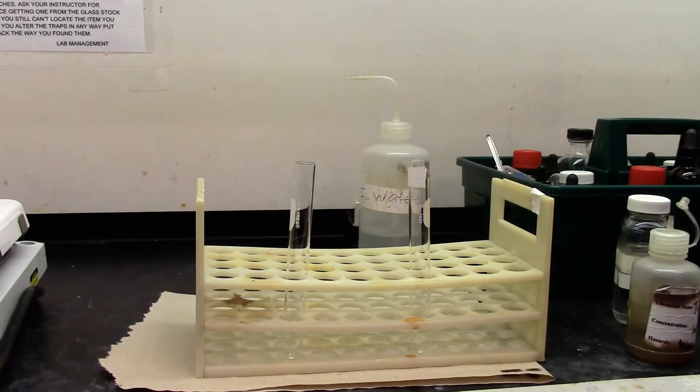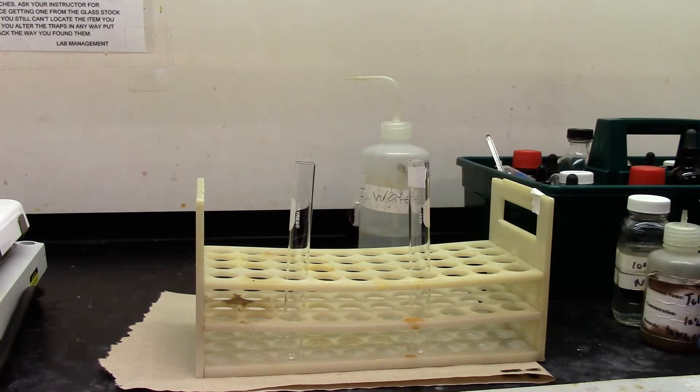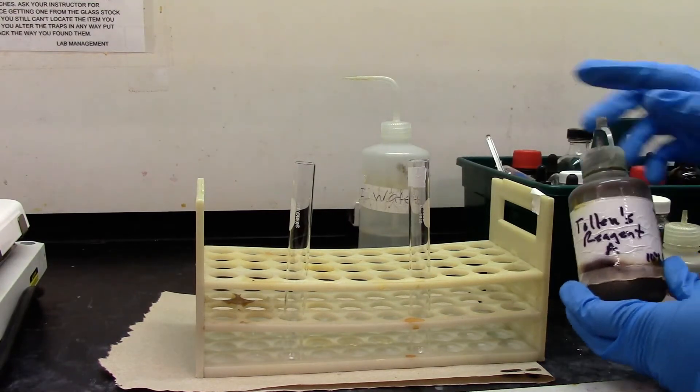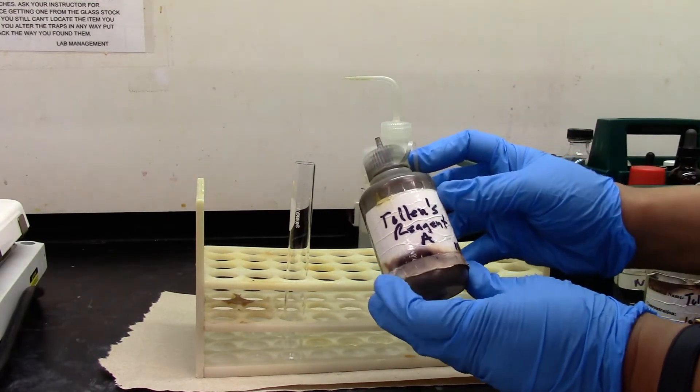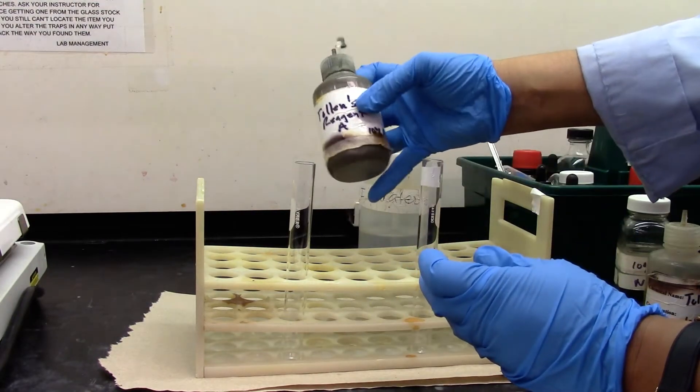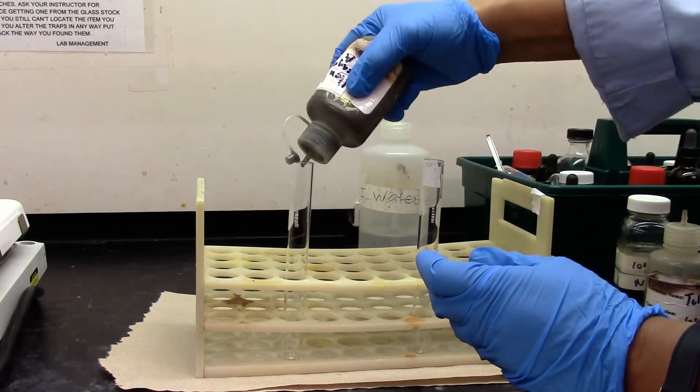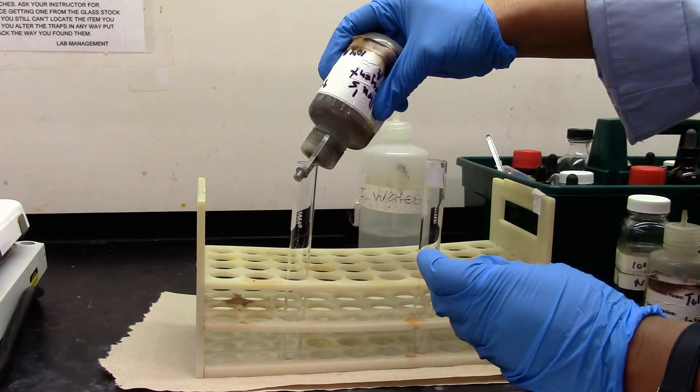We are going to try Tollen's test for aldehyde. First we got to make the Tollen's reagent. I am adding about a milliliter of Tollen's reagent A, that is 10% silver nitrate.